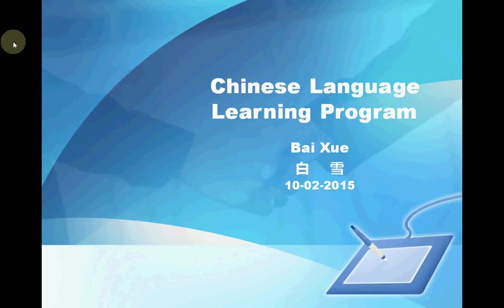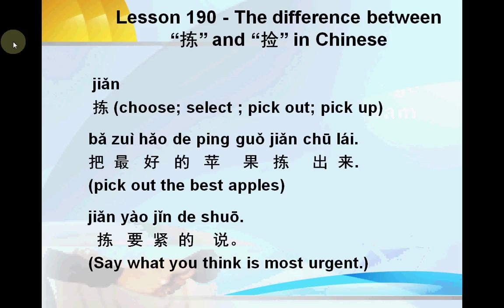Hello everyone, welcome back. This is Baixue's Chinese language learning program. Last time we talked about the difference between two 'zuo' in Chinese. Today we will talk about the difference between 'jian' and 'jian' in Chinese. These two have the same pronunciation but different meanings. Let's see the difference so we can use them correctly.